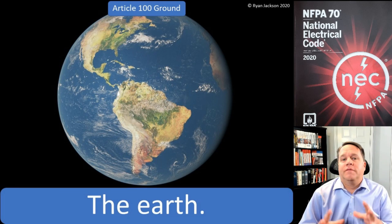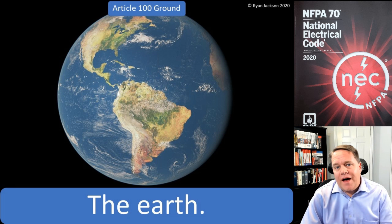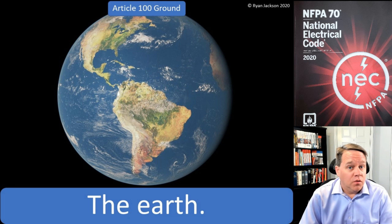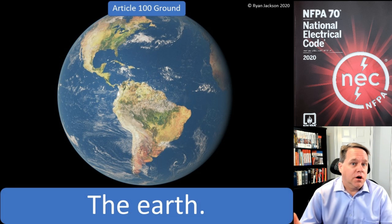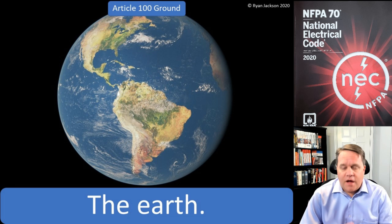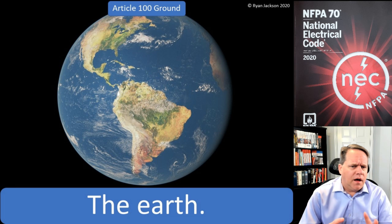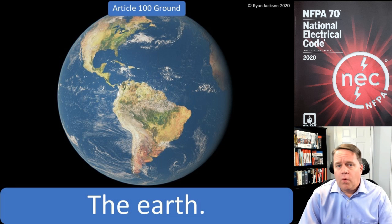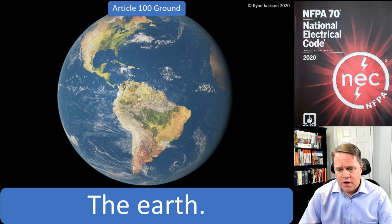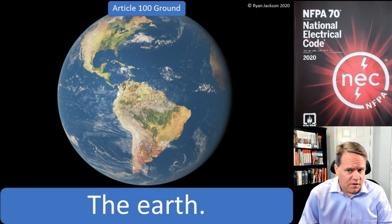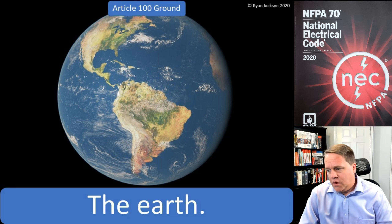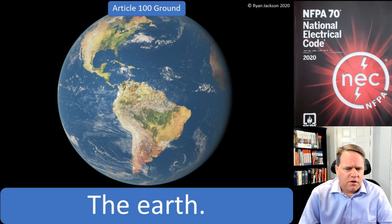Continuing on, we have the term that probably should have the easiest definition in the entire code, and it does: ground. What's ground? Well, it's the earth. There you go. Nice simple definition. Up until 2008, this definition was actually really convoluted — it said that the ground is the earth, or a conductive body that extends the earth connection, or a conductive body that takes the place of earth. Holy cow — what is a conductive body that takes the place of earth?